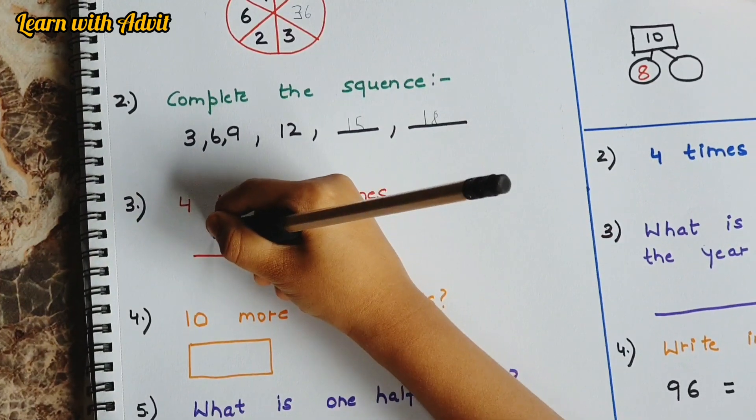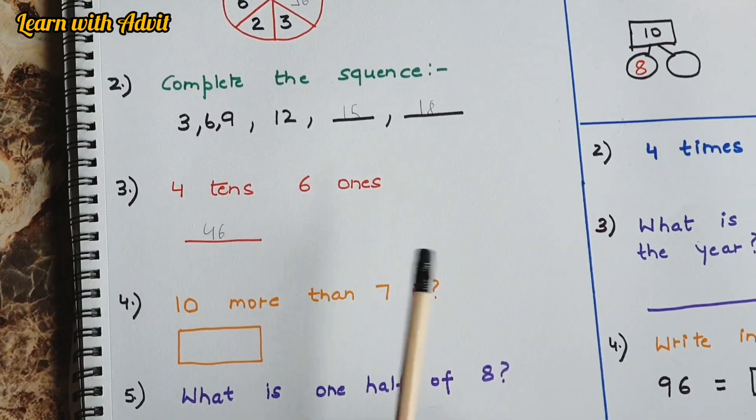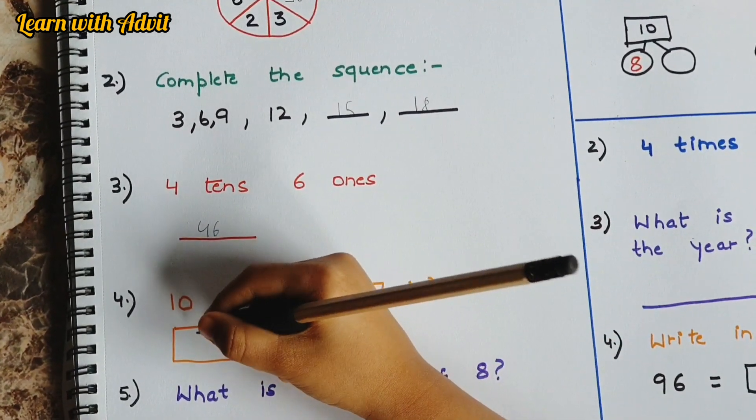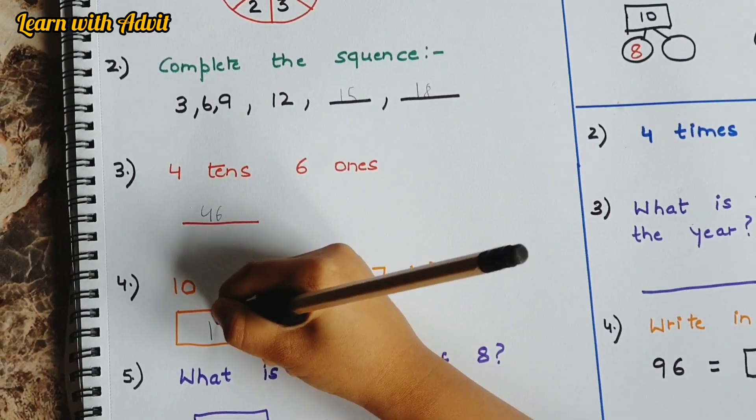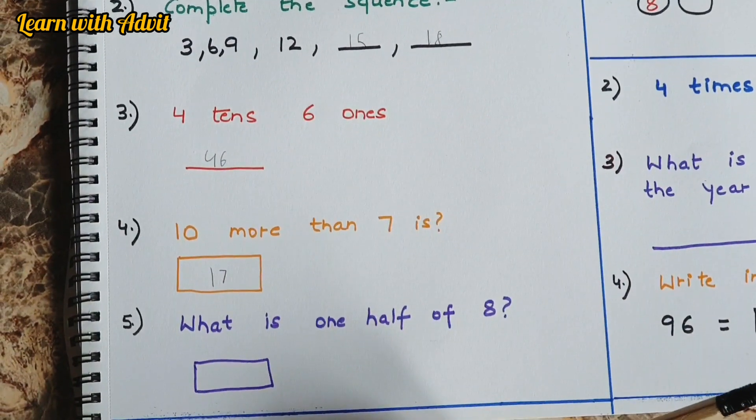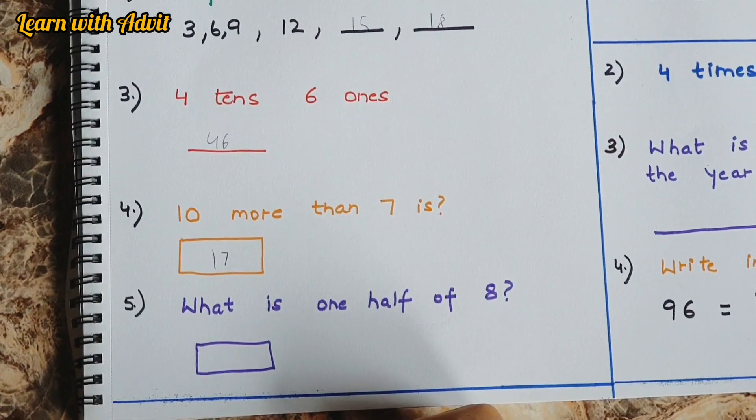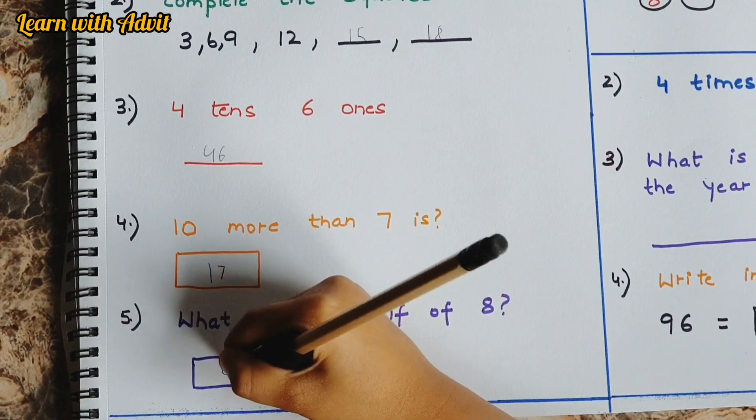10 more than 7 is 17. Very good. 5 less than 10 is 5. Very good. What is one half of 8? 4. What is one half of 16? 8. What is one half of 32? 16.